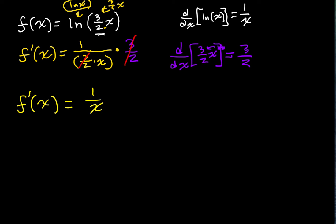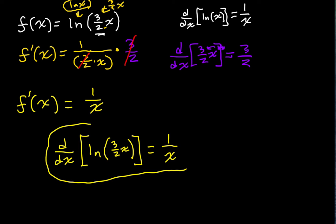So to summarize, the derivative with respect to x of natural log of 3 halves x is equal to 1 over x. And you can plug in different coefficients for x, and when you go through the same process, I think you'll find that it always turns out to 1 over x. This is just a thing about the derivative of the natural log, and perhaps you find that interesting.